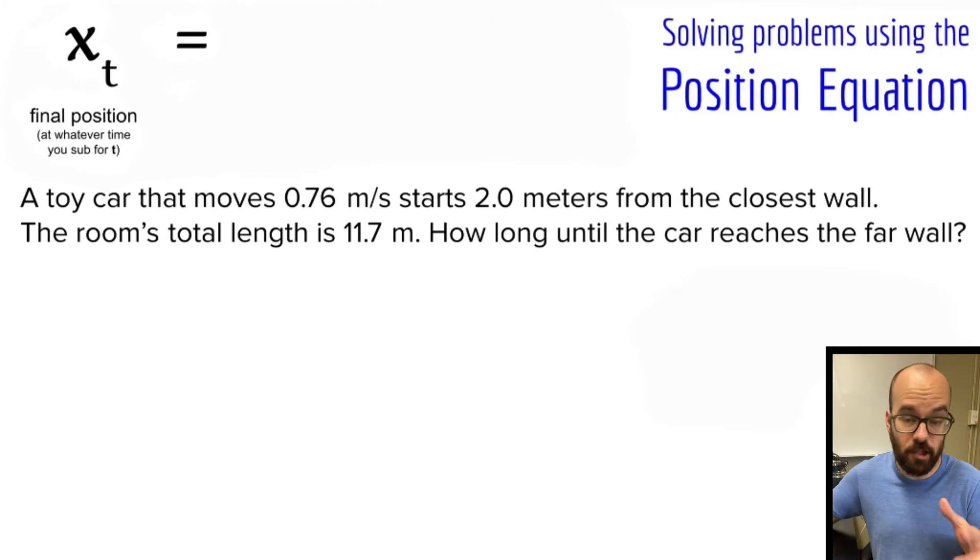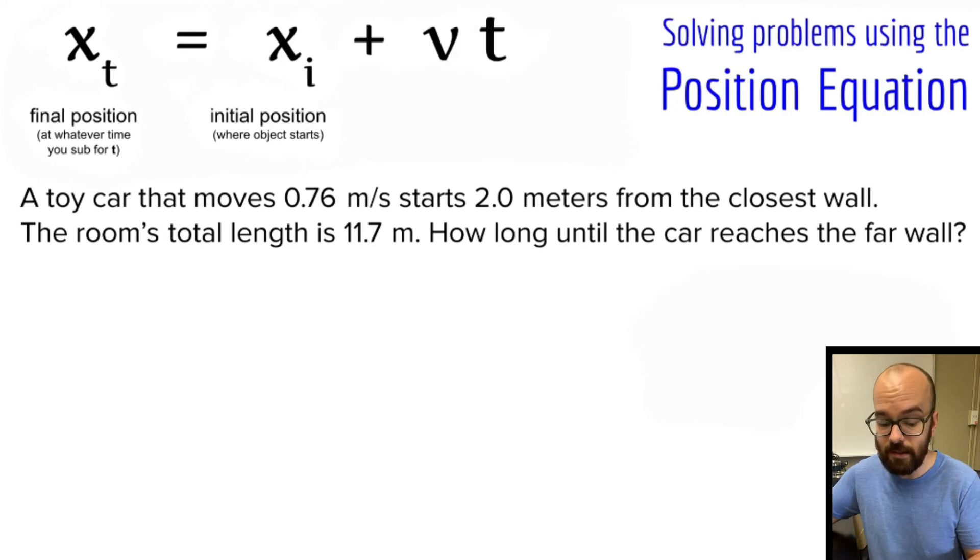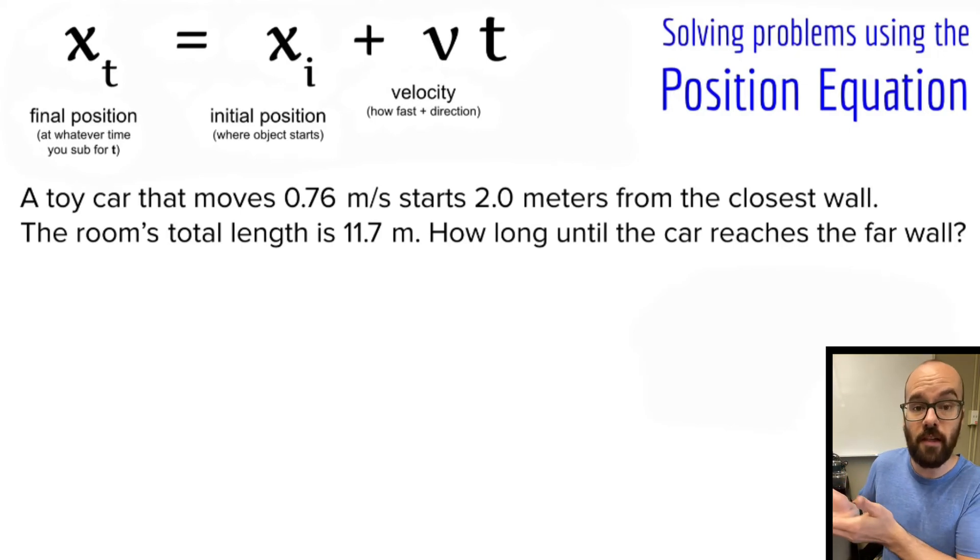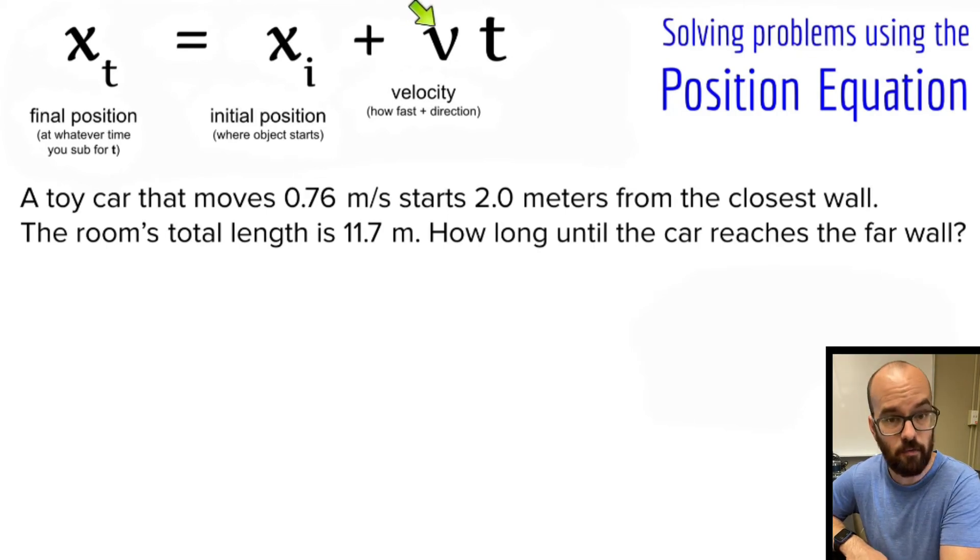What does this position at time t equal? Well, it's going to equal first the initial position x_i, which is where the object starts in relation to the zero position that we're going to define, plus velocity times time. The velocity is how fast the object is going, but also the direction that it's going. In the case of the problem we're looking at here, I'm going to define the object moving forward as the positive direction. But if I had that car start moving backward, then I would need to use a negative velocity to represent that it's going the opposite direction. So whenever using this equation, it's really important that you include either the positive or the negative to define which way the object is moving.